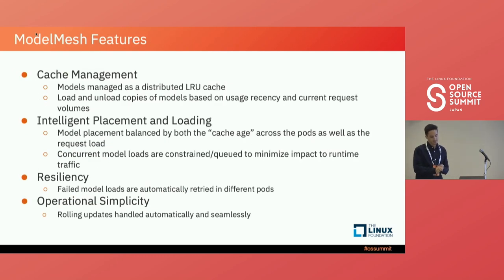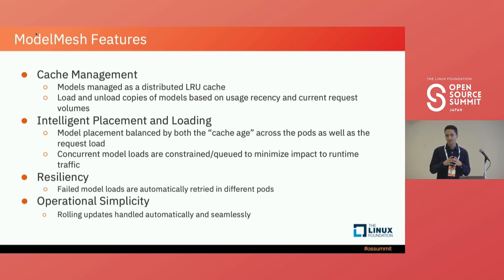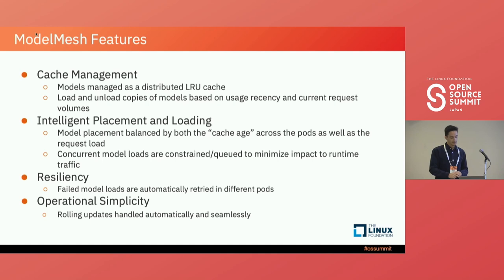At a high level, here are some of the features that Model Mesh brings. The first is cache management: the controller looks at all models like an LRU — least recently used — cache. The way it loads and unloads copies of models is based on two factors: usage recency, meaning how recently a model has been inferenced on or accessed, and current request volume, meaning how heavily used or popular a model is. From there, we get into intelligent placement and loading. Placement refers to the idea that a model doesn't just have to be on one pod — if it's heavily used, it can actually be scaled across multiple pods and therefore be more accessible.